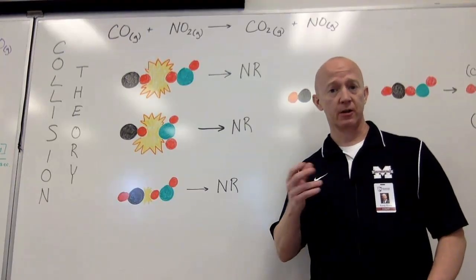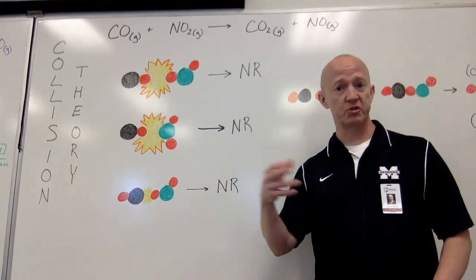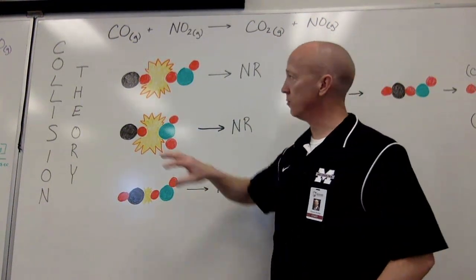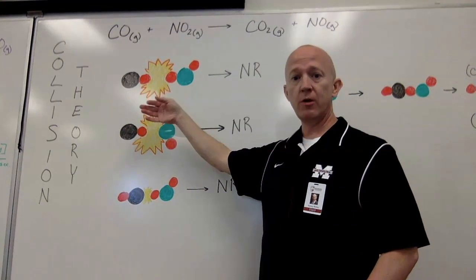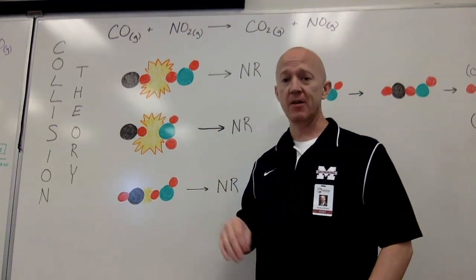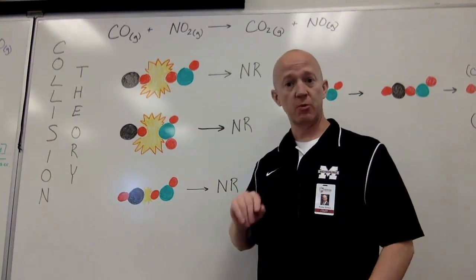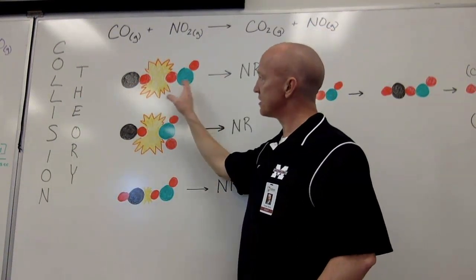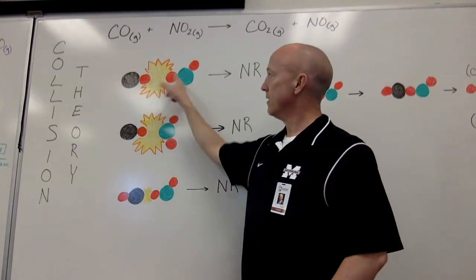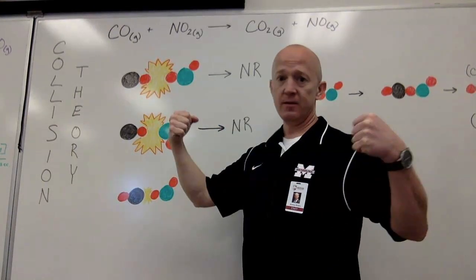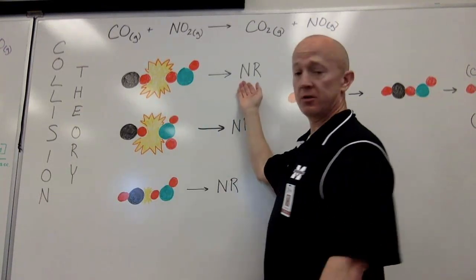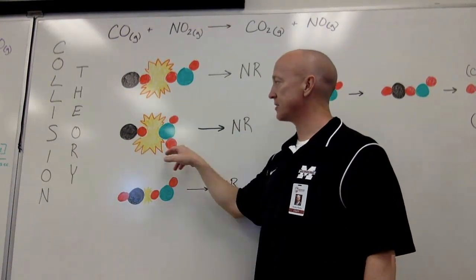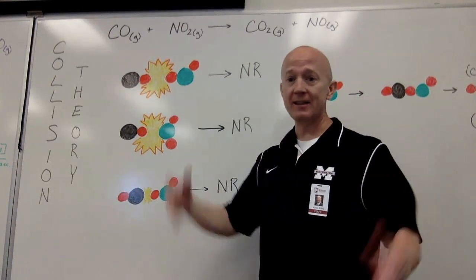Let's talk about collision theory. Using the same reaction, I want to show you what happens when things don't go right — when these compounds come together in such a way that no reaction happens. For our first example, this is carbon monoxide and this is nitrogen dioxide. Notice that if they collide so that oxygen and oxygen collide together, it just repels — rebounds from one another and there's no reaction. Likewise, if carbon monoxide collides with nitrogen dioxide so that oxygen and nitrogen collide, that doesn't do it either. No reaction.